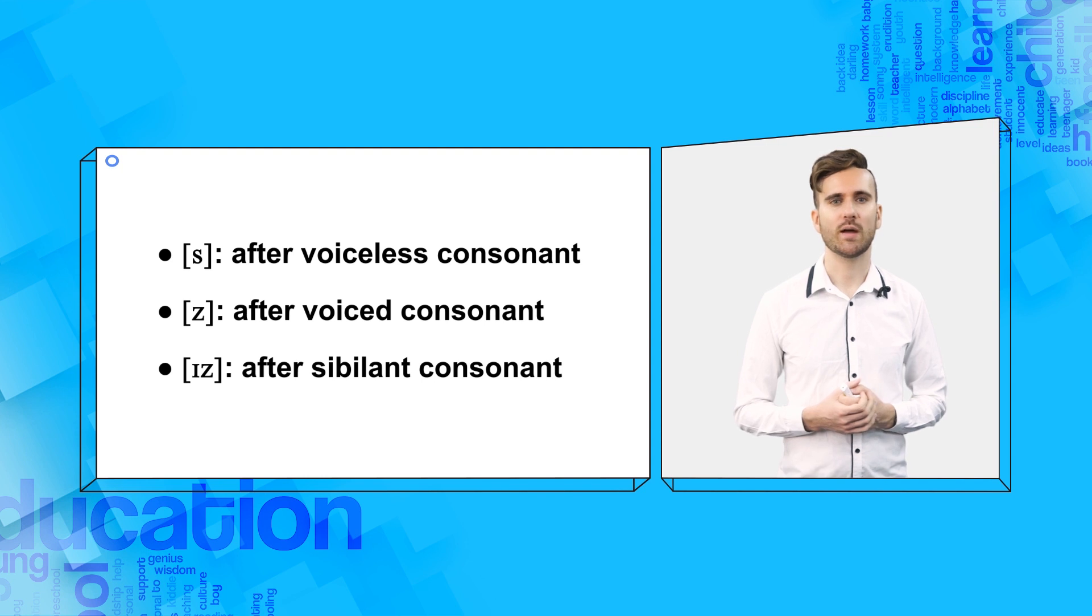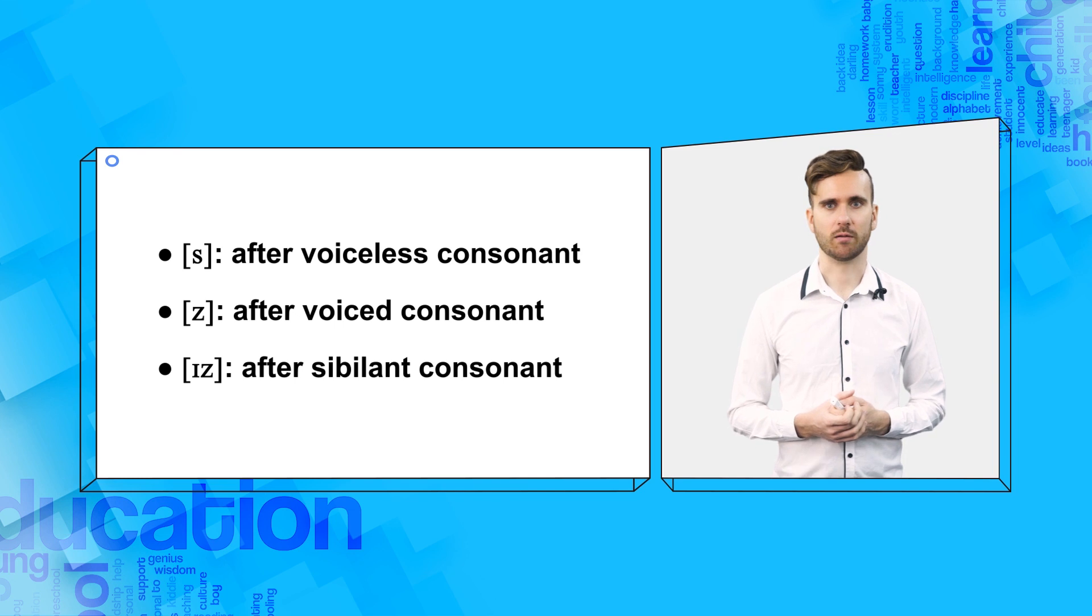This follows a general pattern that English likes to have consonants and vowels next to each other. Thus, when two consonants or two vowels are next to each other, the opposite sound is often added between them. It is the same with the allomorph an. The n was added because it is difficult to say a vowel after a vowel.